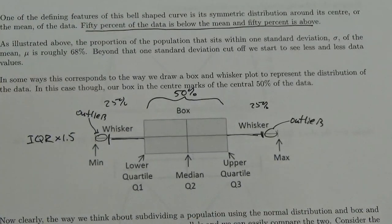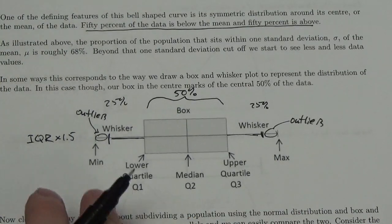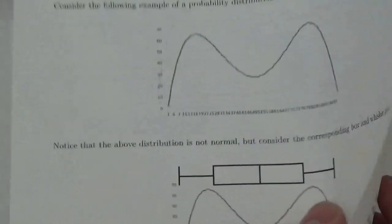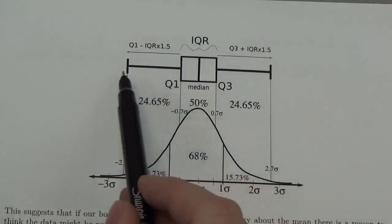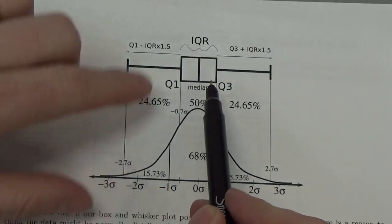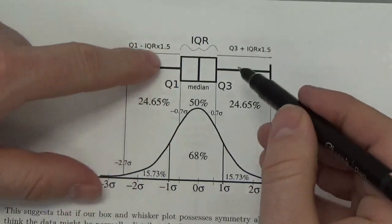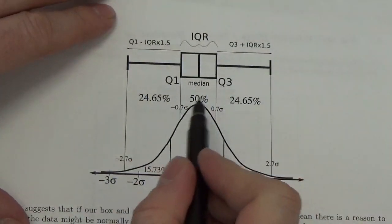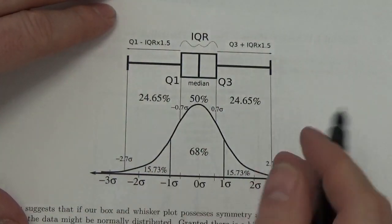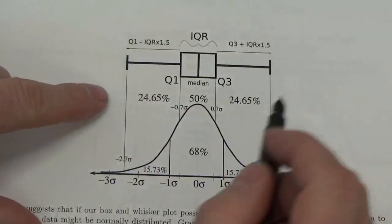And so, we can sort of compare that to the bell curve. And in fact, that's what I want to do. I want to show you this diagram right here, where we've got our median, Q1, Q2, I'm sorry, Q3. You can sort of see how they match up. That's 50% of the data, but this is 68% if I go one standard deviation out here.